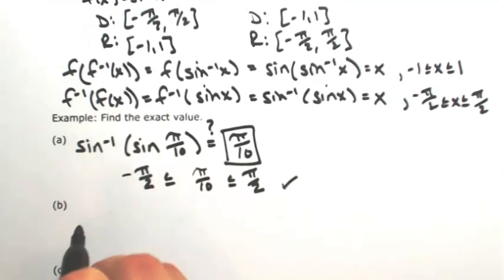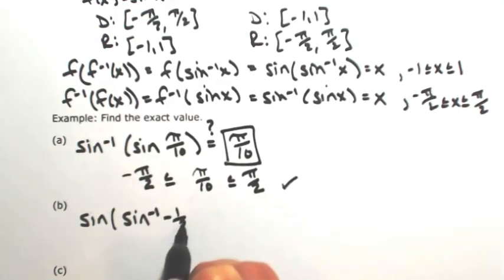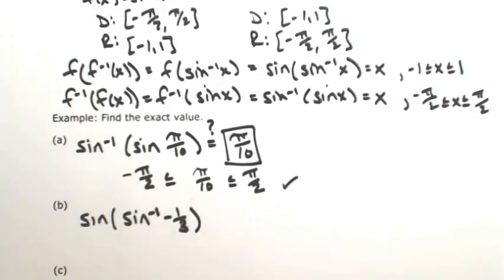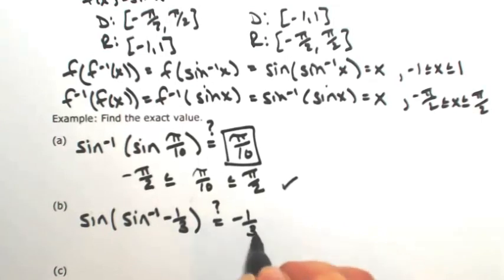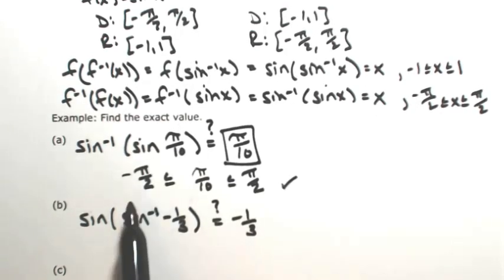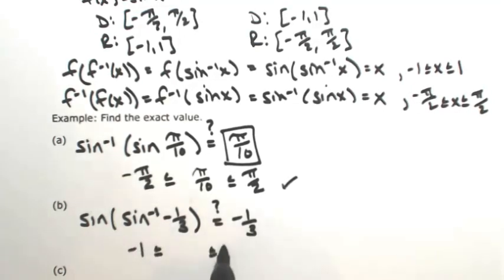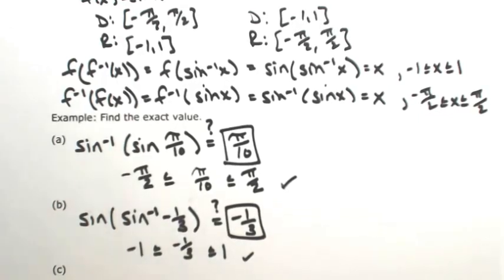Let's go the other way. Let's say I have the sine of the inverse sine of negative 1 third. They would just undo each other, but this is only true if the domain is satisfied. Since we're talking about the inverse sine, the domain is the range of sine, which is negative 1 to 1. So as long as negative 1 third is between negative 1 and 1 — which it is — then they do in fact undo each other, and we get negative 1 third.